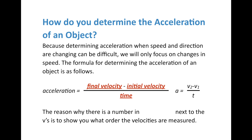You might be wondering about v₂ and v₁ — those are subscripts, not exponents. The numbers indicate the order in which velocities are measured: v₂ is the final velocity and v₁ is the initial velocity. So final velocity minus initial velocity over time gives us acceleration. Let's apply this formula.